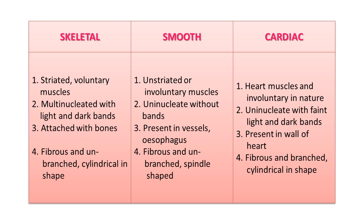Skeletal muscles attach to bones. Smooth muscles are present in vessels and the esophagus. Cardiac muscles are present only in the wall of the heart. Shape-wise: skeletal muscles are fibrous, unbranched, and cylindrical; smooth muscles are fibrous, unbranched, and spindle-shaped; cardiac muscles are fibrous and branched cylindrical. All three differ in structure, composition, and location in the body.